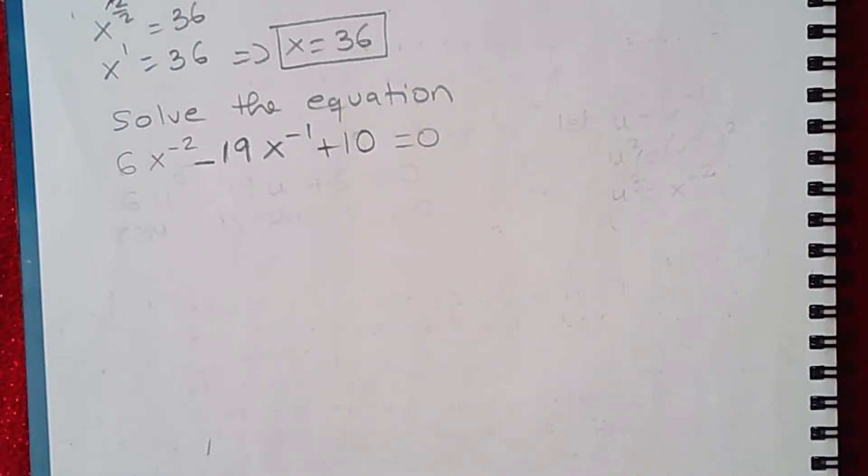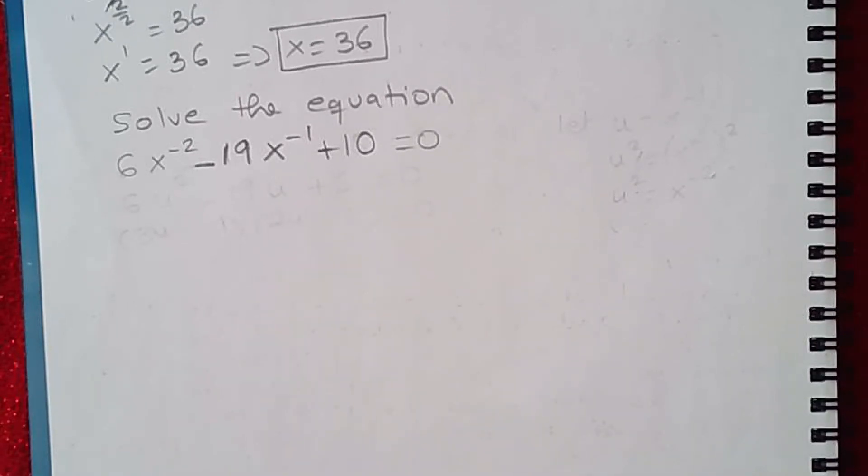We're going to continue solving equations from section 9.4. Here I have 6x to the negative 2 minus 19x to the negative 1 plus 10 equals 0.